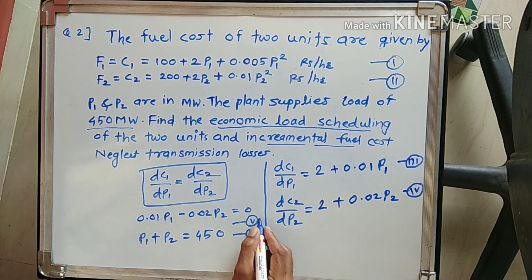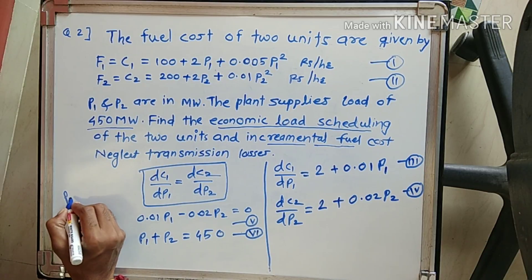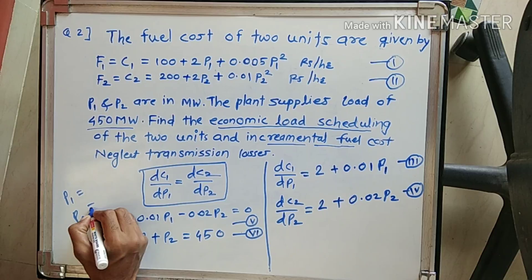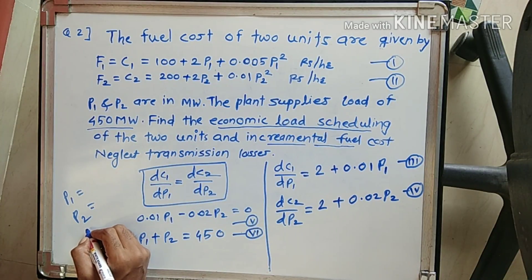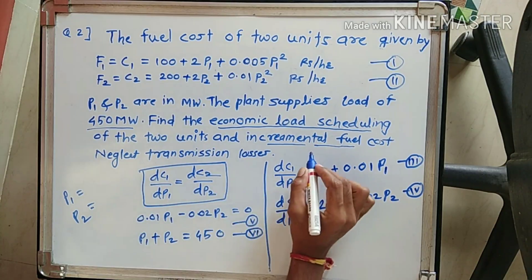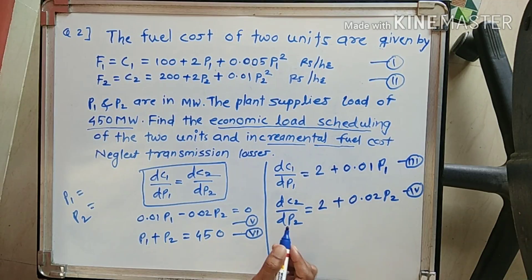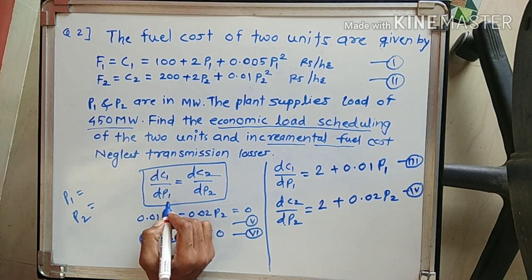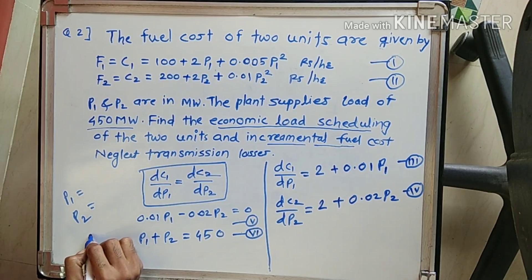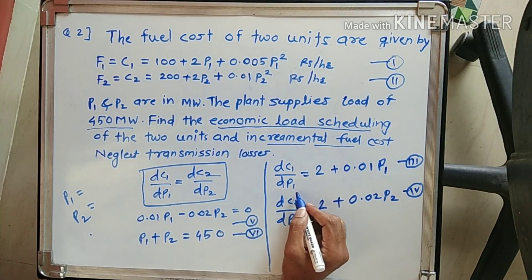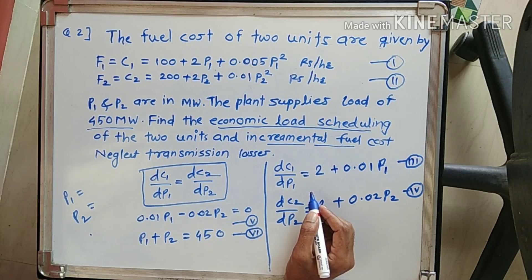Solving equations 5 and 6, we will get the values of P1 and P2 — the economical load sharing. They also ask for incremental fuel cost, so put the values of P1 and P2 into equations 3 and 4 to get the incremental fuel cost. Find the values and send the answer in the comment box.